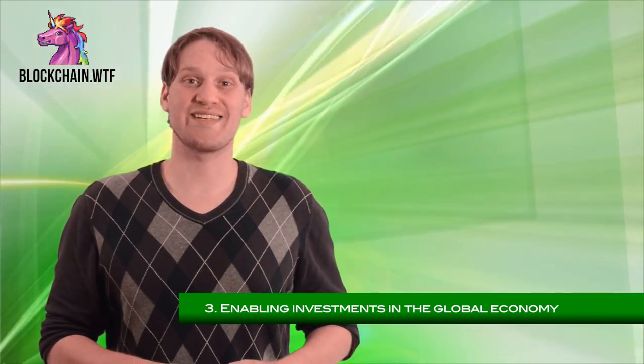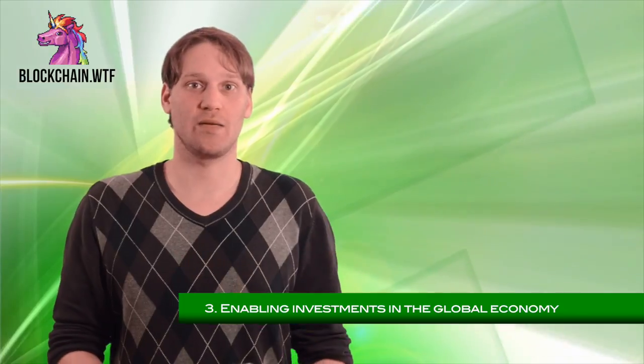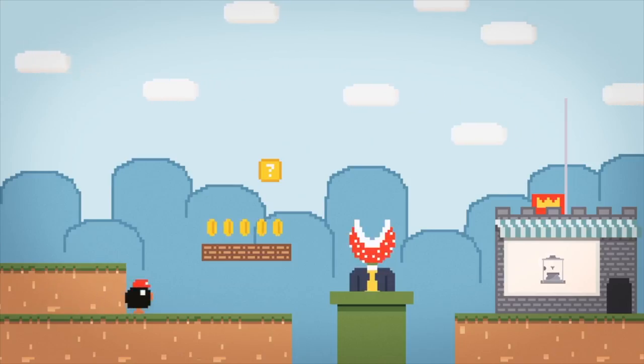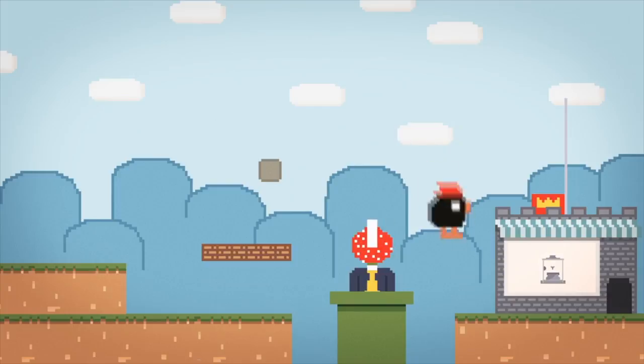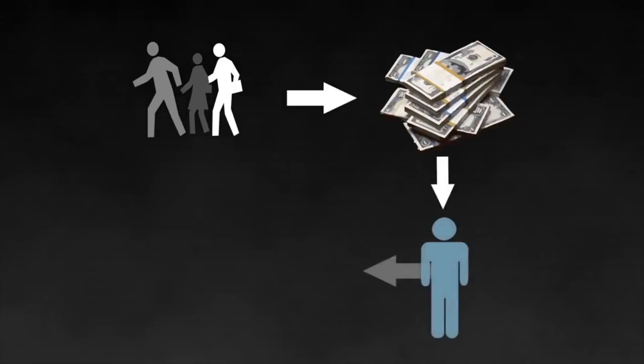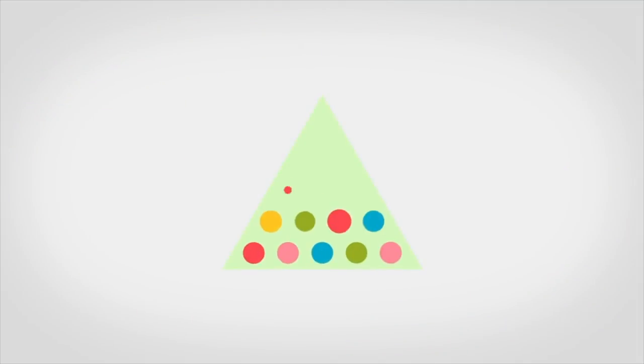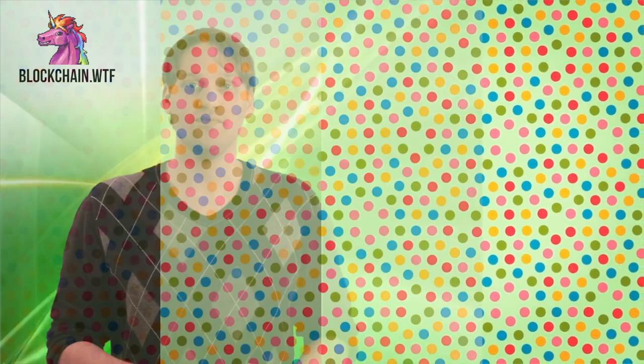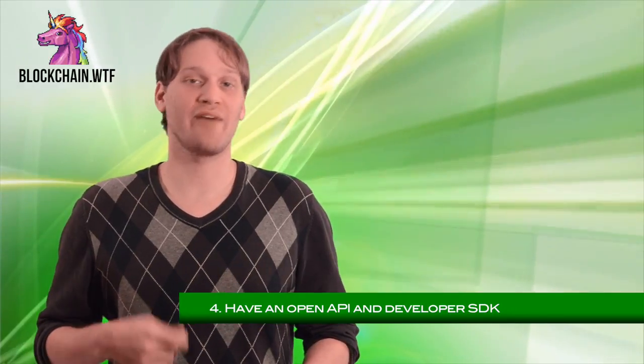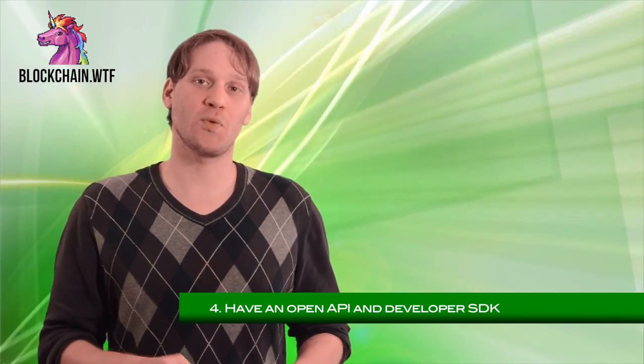Another goal that Cashaw has is enabling investments in the global economy. Cashaw products are supposed to enable users to access the global economy in a decentralized manner. Right now, in order for these places to grow economically, they're going to have to obtain loans and right now that's just not an option. Cashaw hopes to facilitate the transfer of value across borders and that allows investors greater diversification in their portfolio and hopefully higher yields. And the last goal just reaffirms their dedication to having an open API and their developer SDK.